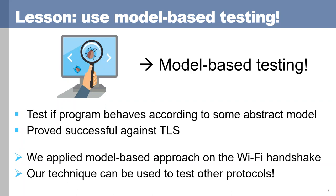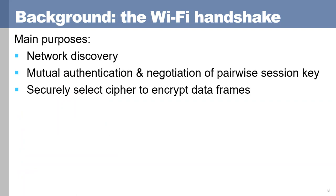The goal of my presentation now is to apply this model-based testing approach to the Wi-Fi handshake, and I will discuss some of the vulnerabilities we discovered so you can have an idea of the type of bugs that these techniques are able to find. I believe this technique can also be applied to other protocols. In order to explain how we tested implementations of the Wi-Fi handshake, I'm first going to briefly introduce how the Wi-Fi handshake works. Its first purpose is to discover nearby networks, and once a client has discovered a network it will connect. The Wi-Fi handshake then provides mutual authentication between both the client and the access point.